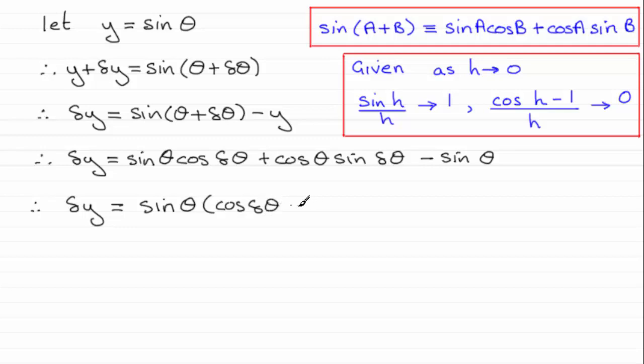And then I've got minus 1 for that term there. And then we'll just put that term down plus the cosine then of theta sine delta theta.